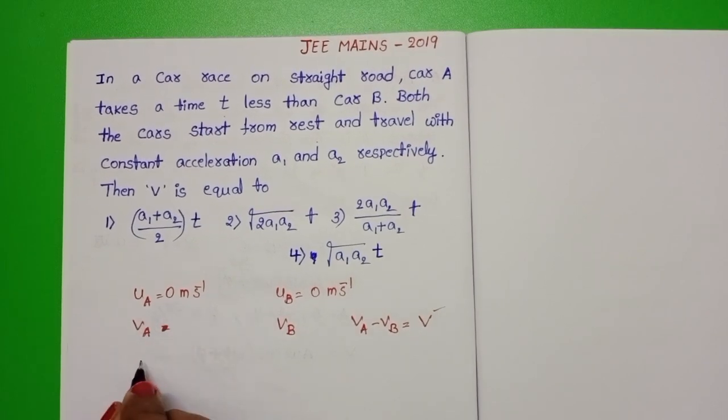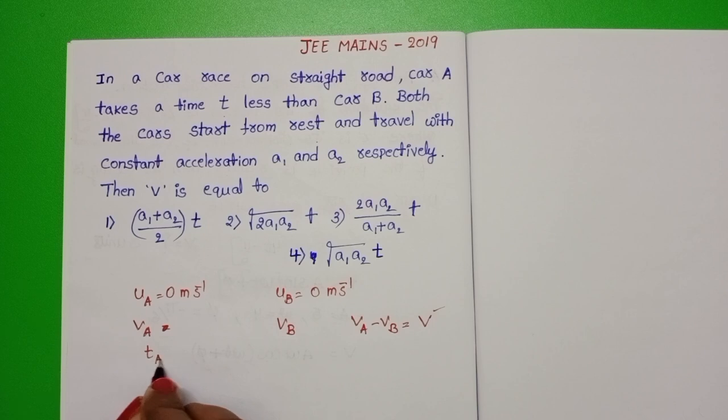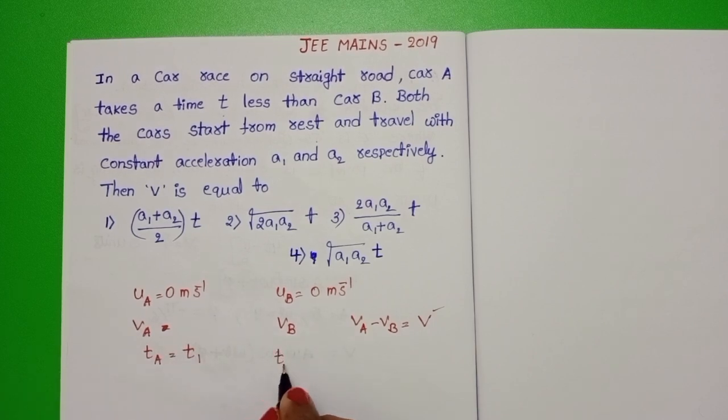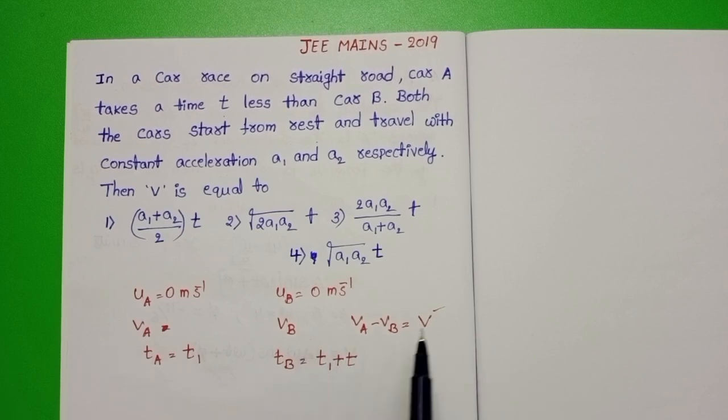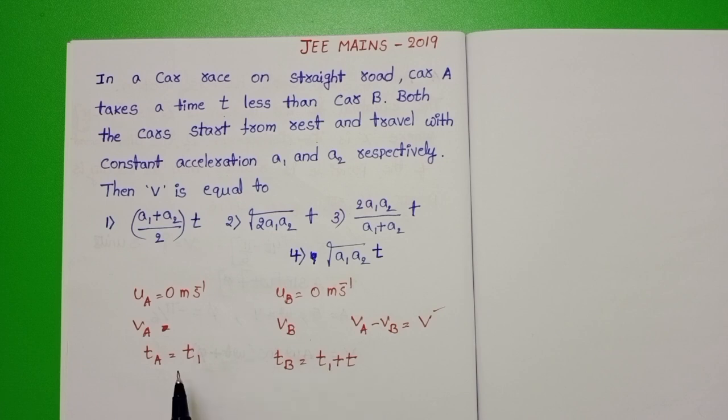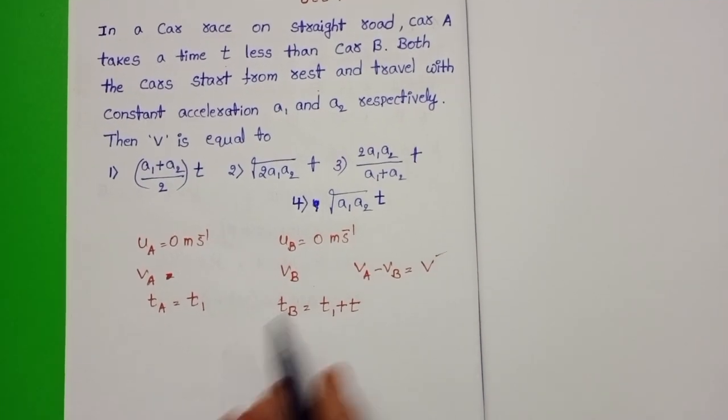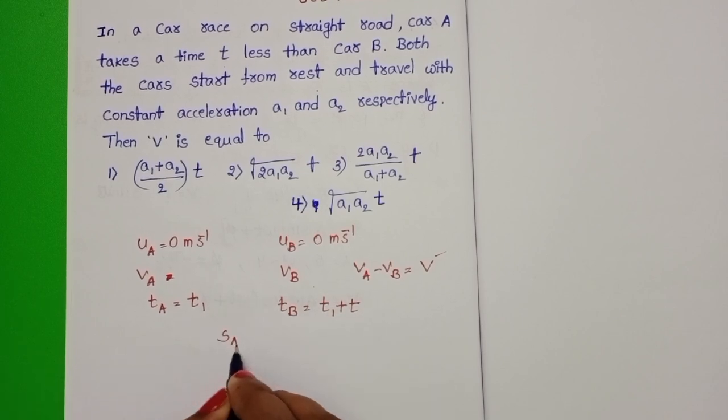Let time taken by car A is equals to T1 and time taken by car B is equals to T1 plus T. Why? Because the velocity of car B is less than car A. For each the same distance, car B takes more time when compared to car A. So distance is the same. SA is equals to SB.